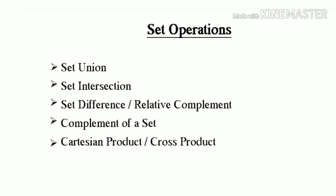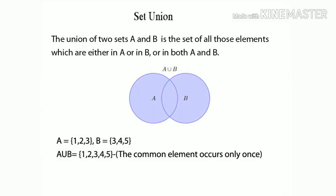Next topic is set operations. Set union. The union of 2 sets A and B is the set of all those elements which are either in A or in B or in both A and B. For example, A equal to {1, 2, 3}, B equal to {3, 4, 5}. A union B equal to {1, 2, 3, 4, 5}. The common elements occur only once.